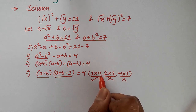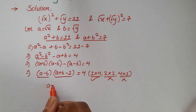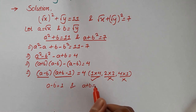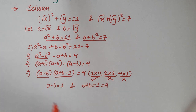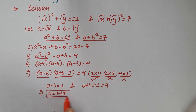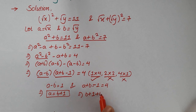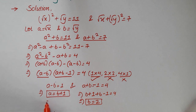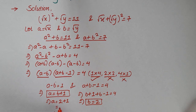So let's go with 1 multiplied by 4. We have a minus b is equal to 1 and a plus b minus 1 is equal to 4. This gives us a is equal to b plus 1. Placing the value of a in the second equation: b plus 1 plus b minus 1 is equal to 4, which gives us b is equal to 2.